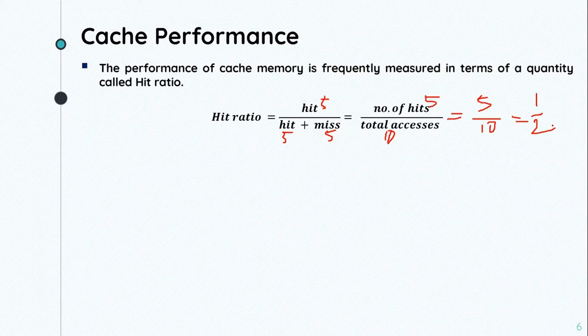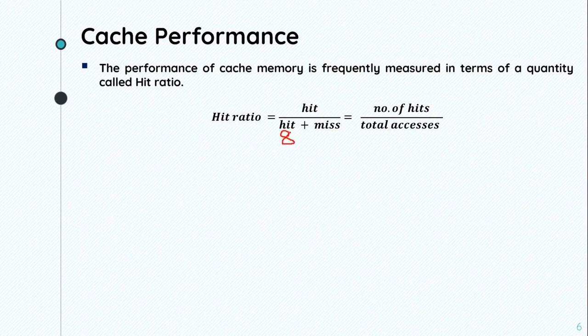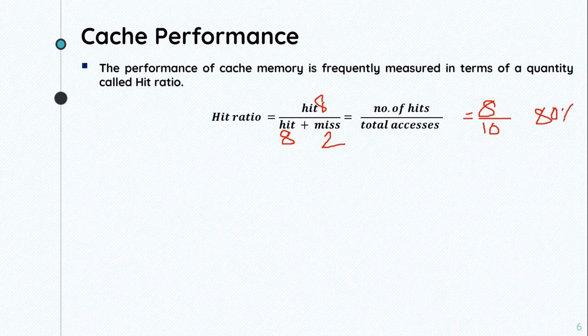Another example: if total hit count is 8 and miss count is 2, then total number of accesses is 10. So 8 divided by 10 gives us 80 percent as the hit ratio.